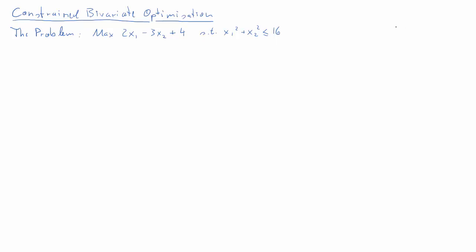Here we have an optimization problem. We want to maximize 2x₁ minus 3x₂ plus 4, subject to the constraint that x₁ squared plus x₂ squared is less than or equal to 16.